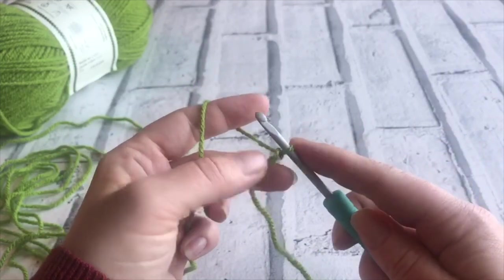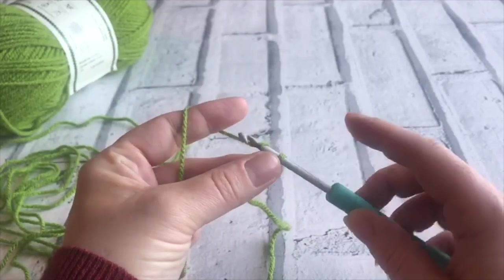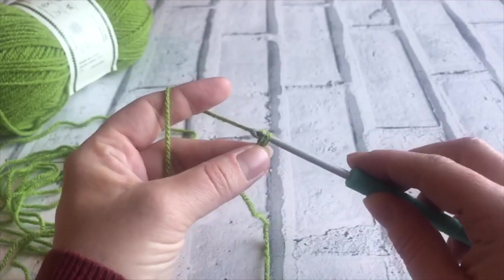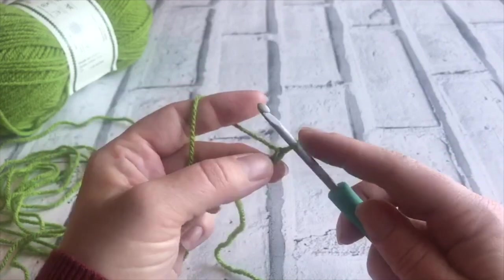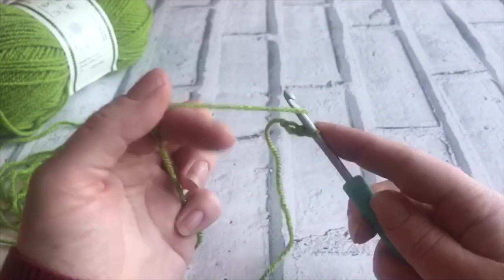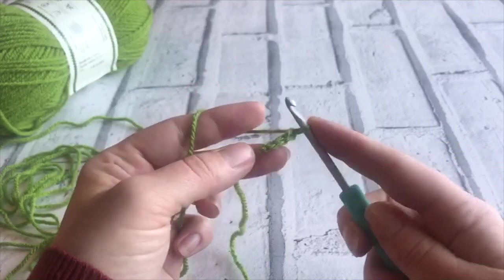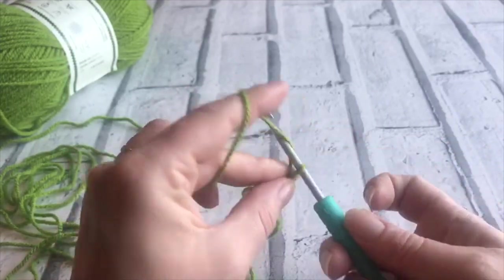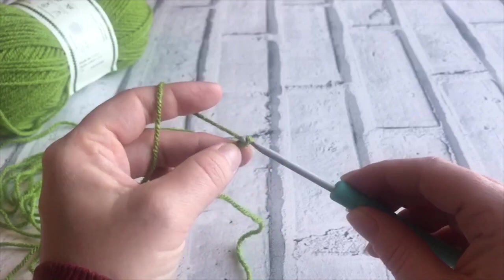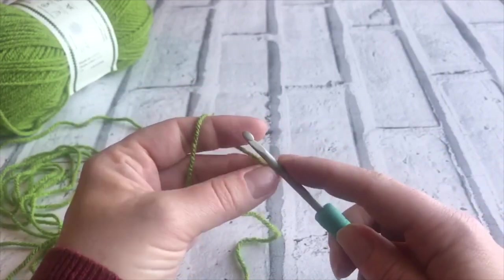So yarn over the hook, yarn over the hook and bring it through. As you can see, it's starting to create a chain there. So just yarn over and bring it through the loop on your hook, as simple as that.